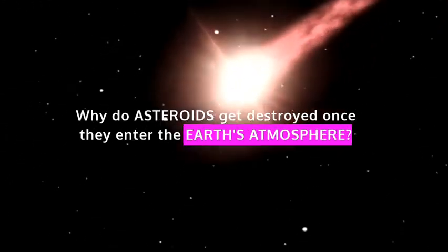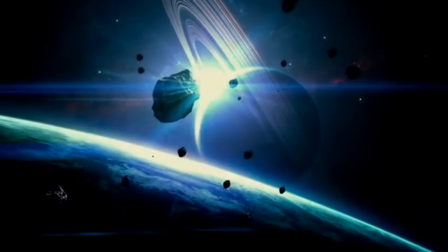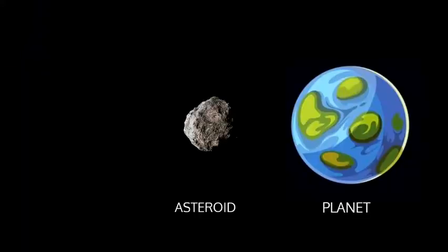Why do asteroids destroy once they enter the Earth's atmosphere? Asteroids are small rocky bodies that orbit the sun. They are smaller in size than planets and larger than meteorites.